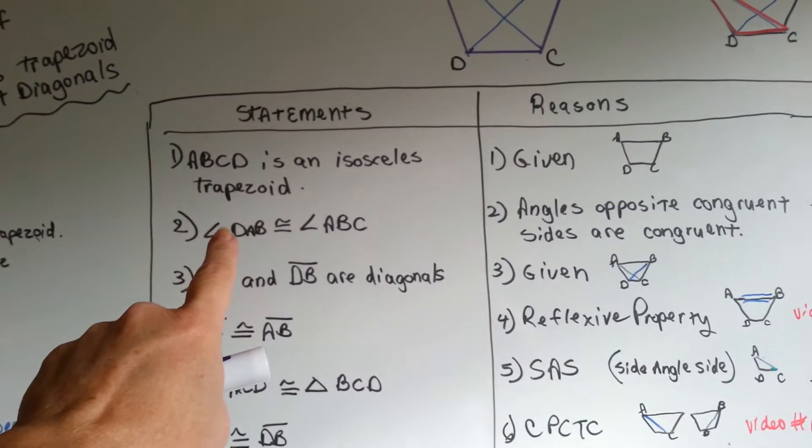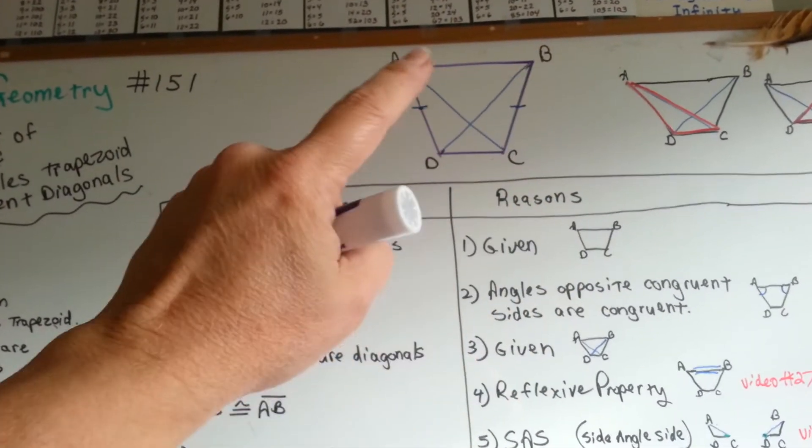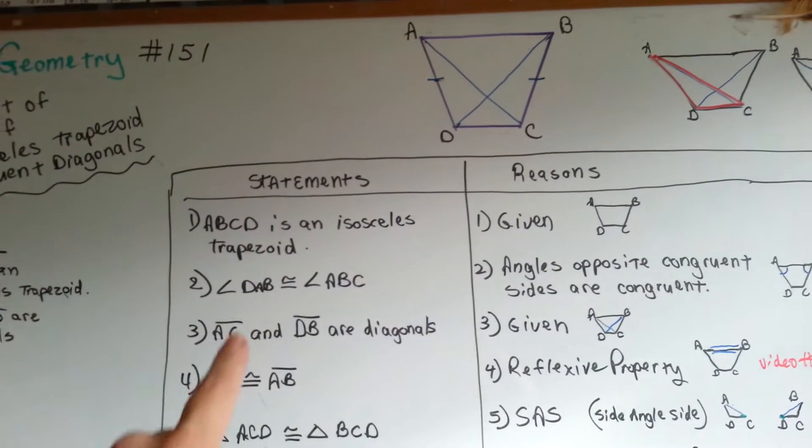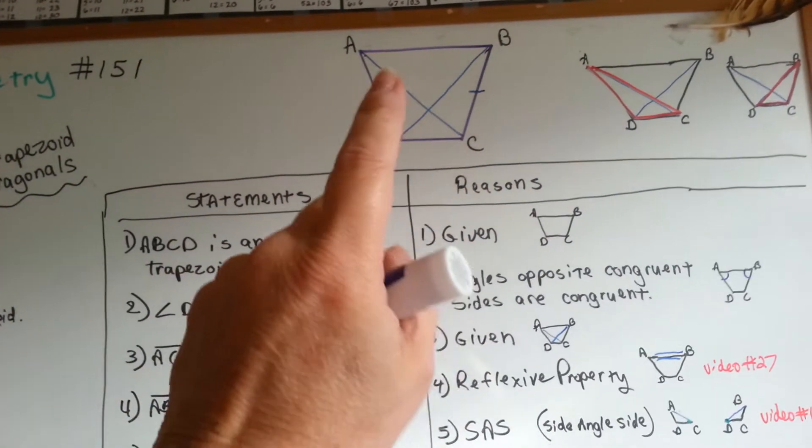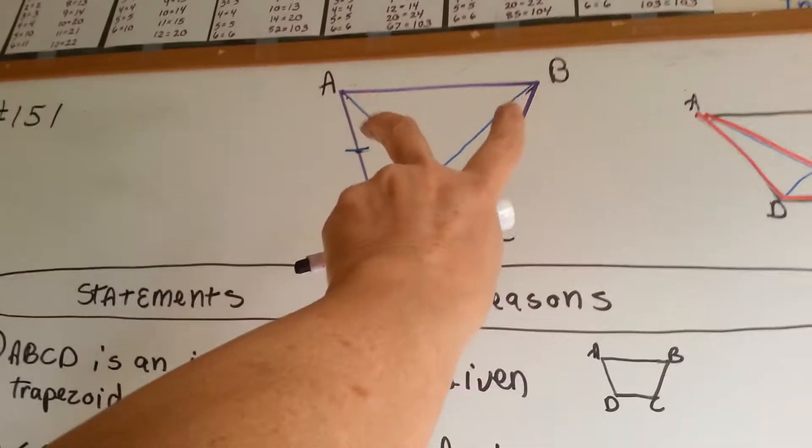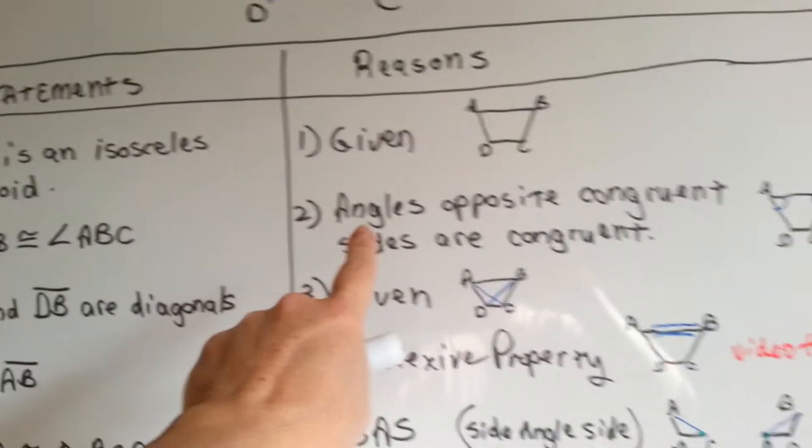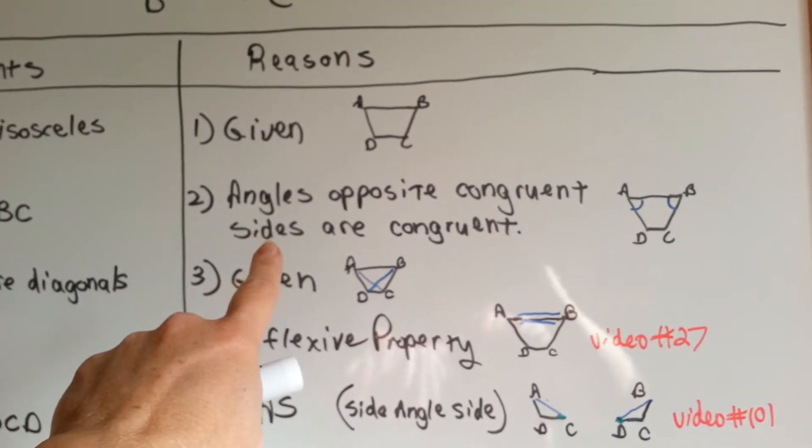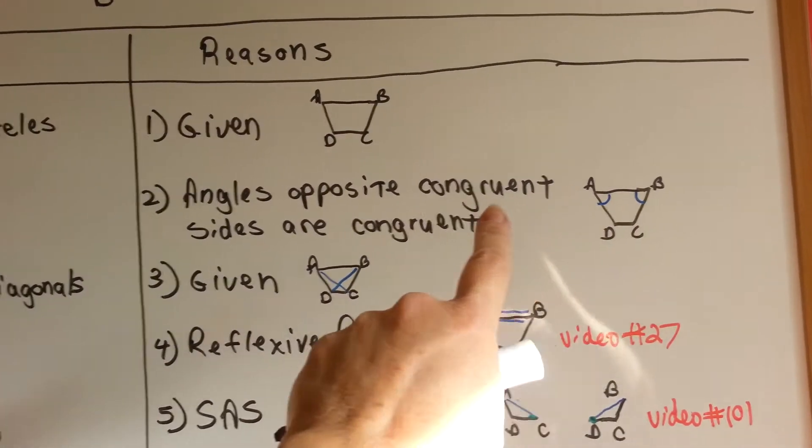Number two, I've got angle DAB. DAB, that's this angle up here. Is congruent to ABC. So it's saying that these two top corner ones are congruent. My reasoning is angles opposite congruent sides are congruent. That's congruent to that.